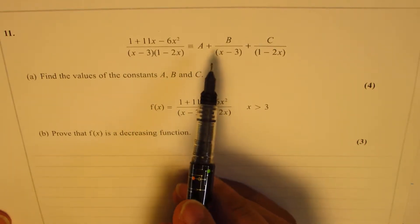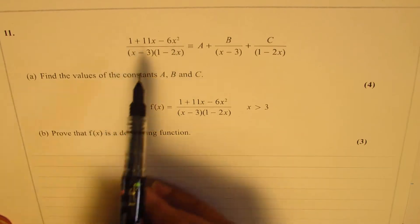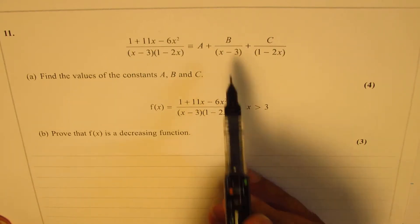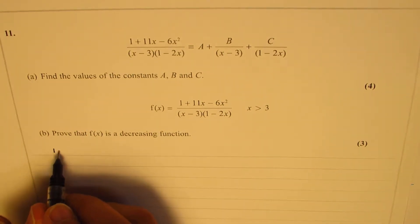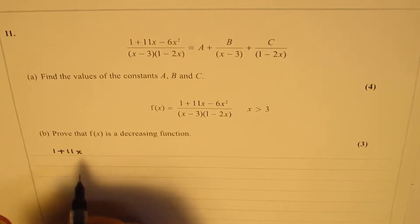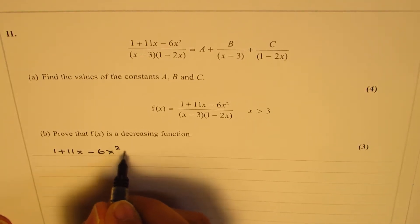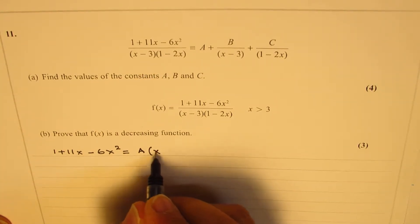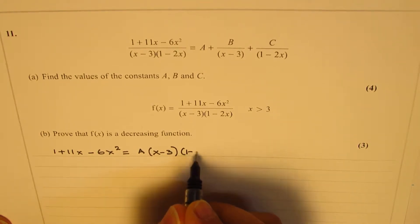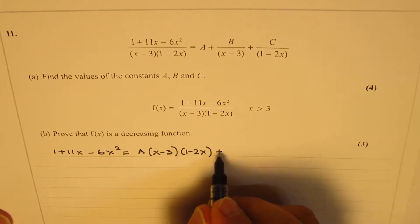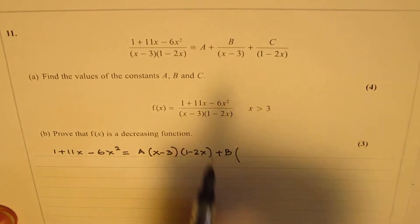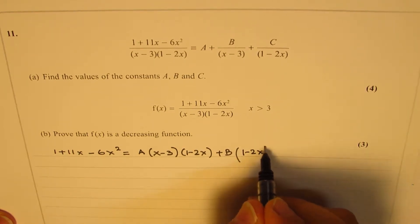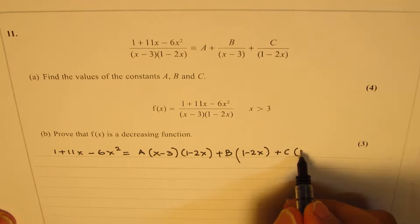Now to find the constants a, b, and c, we'll cross multiply and rewrite this equation. So we have 1 + 11x - 6x² = a(x - 3)(1 - 2x) + b(1 - 2x) + c(x - 3). When you multiply the factors, (x - 3) gets cancelled for the b term, so you get (1 - 2x), plus c times (x - 3).